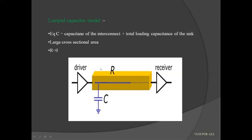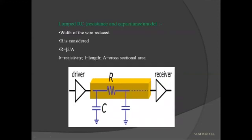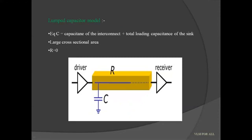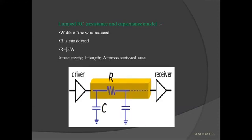We are neglecting the resistance because we are using a wire which has a large cross-sectional area. As we know the formula R = ρL/A — R is the resistance, ρ is the resistivity, L is the length, and A is the cross-sectional area. Since the cross-sectional area is large, the resistance is neglected. This is how the lumped capacitor model looks like.